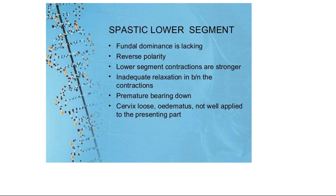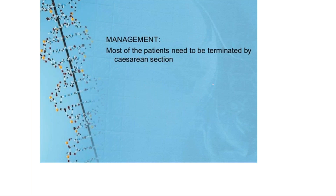Spastic lower uterine segment involves disturbed polarity. Fundal dominance is lacking — there is reversal of polarity where the lower uterine segment, instead of dilating and relaxing, becomes spastic and contracts. There is inadequate relaxation between contractions, premature bearing down, but the cervix does not dilate properly. The cervix is loose and not well applied to the presenting part. Management in most cases is caesarean section.